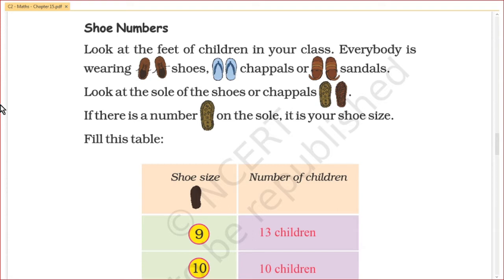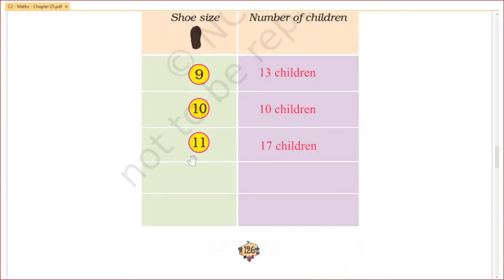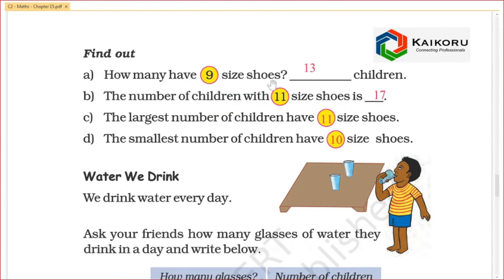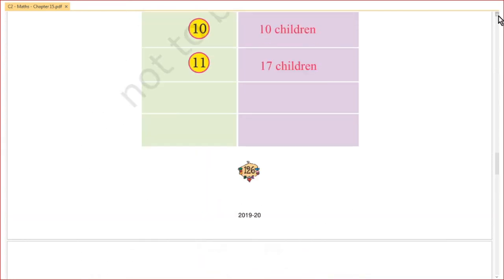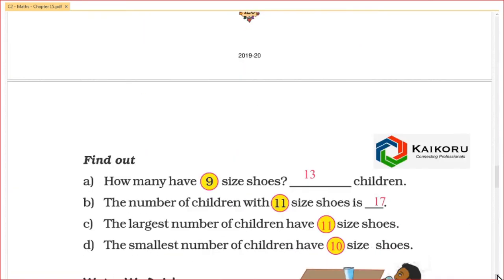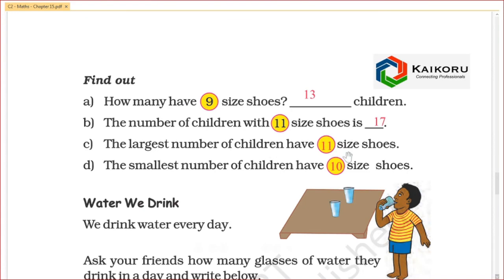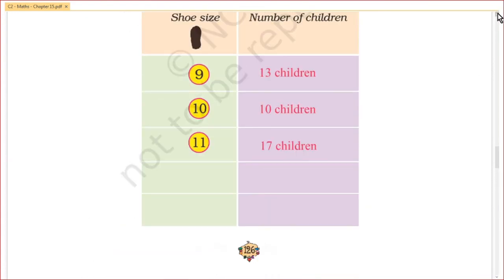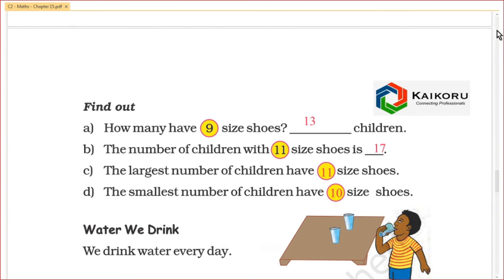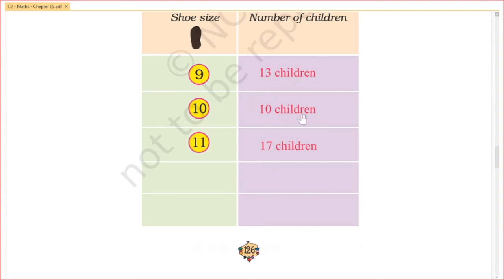If you look at the sole, you can see the number — that's the shoe size. The sizes are 9, 10, 11. How many children have size 9? How many have size 10? The number of children with size 11 shoes is 17 children. The largest number of children have size 11 shoes. The smallest number of children have size 10 shoes. So 10 is that size.